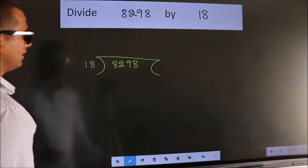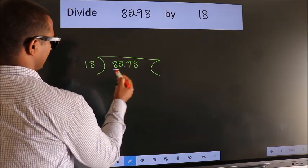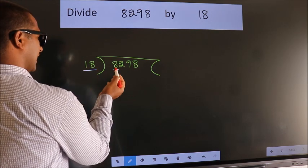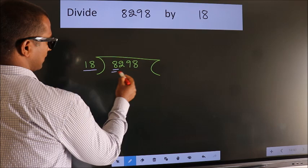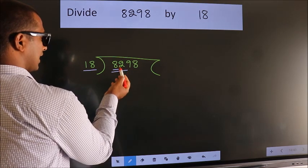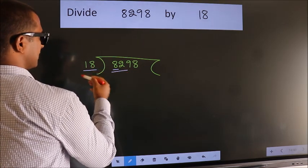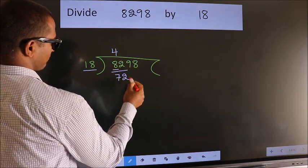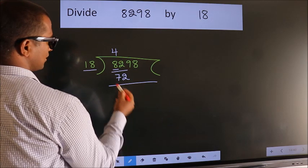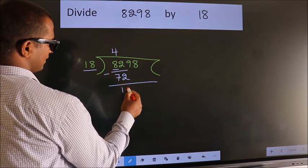Next, here we have 8. Here 18. 8 is smaller than 18, so we should take 2 numbers: 82. A number close to 82 in the 18 table is 18 times 4 equals 72. Now we should subtract. We get 10.